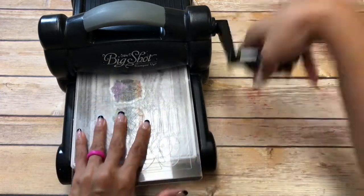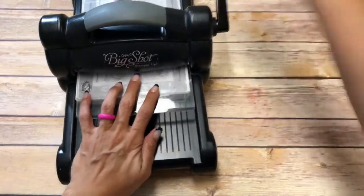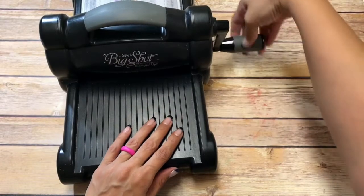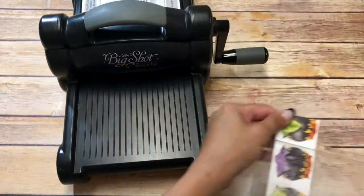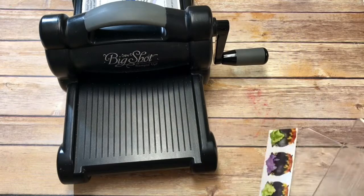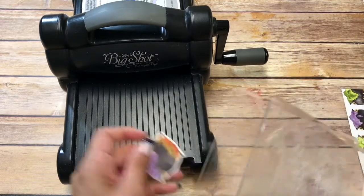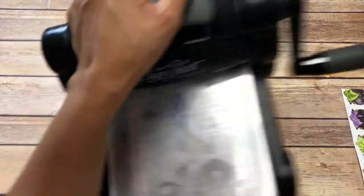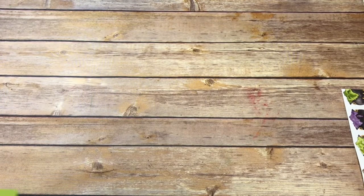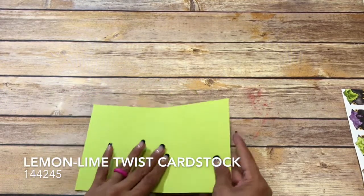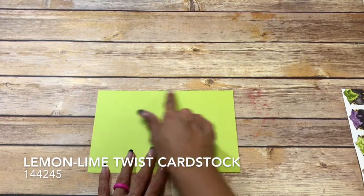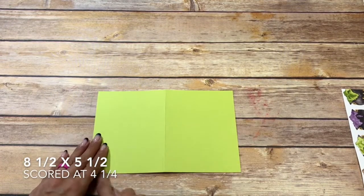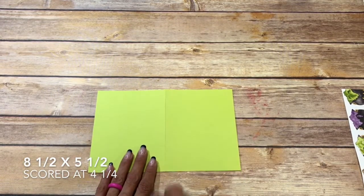All right, so we run that through. Look how perfect that is. Our card base is Lemon Lime Twist and it's eight and a half by five and a half and I scored it at four and a quarter.